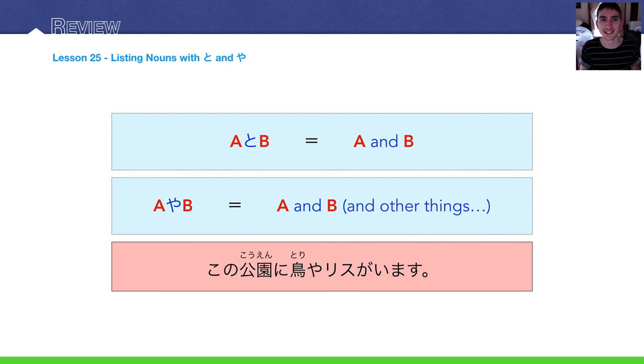Lesson 25, listing nouns with to and ya. To and ya can be both translated as and in Japanese, but they imply different things. So, to, if you're listing things with to, you are implying that only these things exist, or only these things are being talked about.